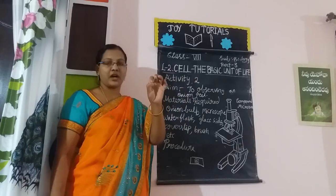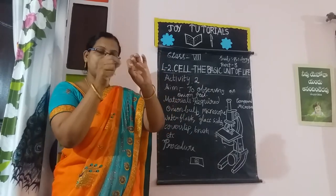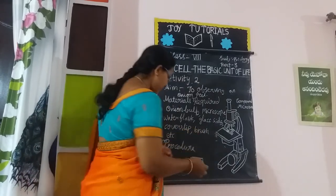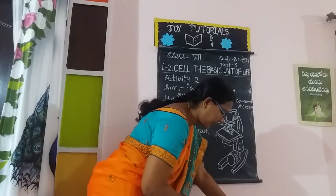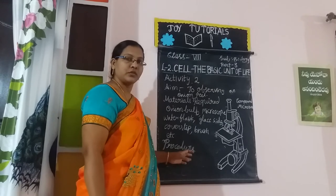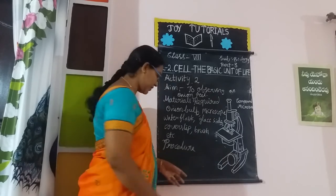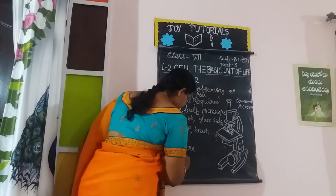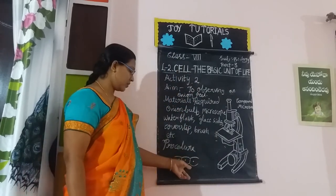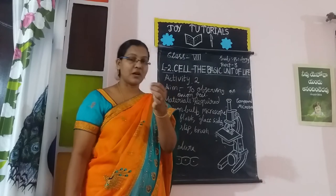Here some precautions are there. We have to make sure this transparent layer should not be folded. We have to take a small portion and keep it with the help of a brush. Then we have to observe carefully under the microscope. Do not allow air bubbles; that layer should not be folded. Whatever we are observing, our observations we have to write in our notebook. These are also plant cells, similar to cork cells and matchstick cells - all are plant cells.